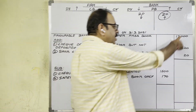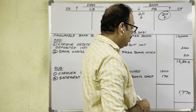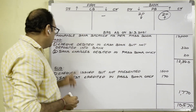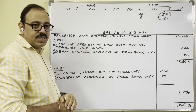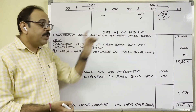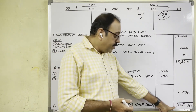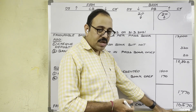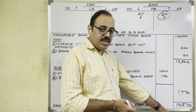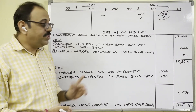All amounts are counted. Add: 12,000 and 340 gives 12,340. Then subtract 1,770 from 12,340, giving 10,570. Write here: 'Favorable bank balance as per cashbook — 10,570.' In the question, favorable bank balance as per passbook was given; we calculated favorable bank balance as per cashbook. We wrote 'favorable' because we got a positive value. If the value were negative, we would write 'Overdraft bank balance as per cashbook.' This is all about the fifth problem. Hope this video is helpful to you. Thank you.